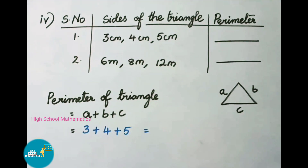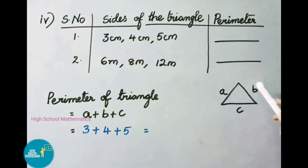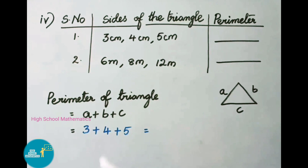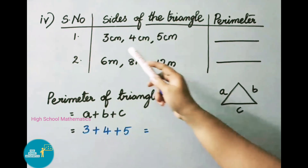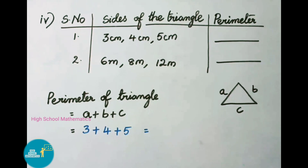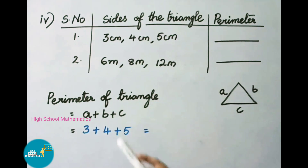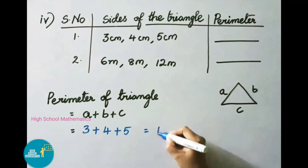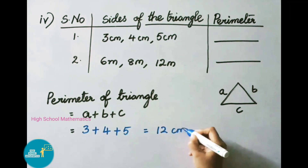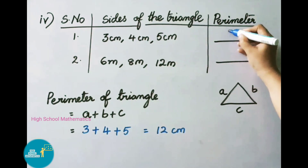For the fourth question, they have given the sides of triangles and we need to find the perimeter. The perimeter of a triangle = A + B + C, the sum of its three sides. For the first triangle, sides are 3 cm, 4 cm, and 5 cm. Perimeter = 3 + 4 + 5 = 12 centimeters.